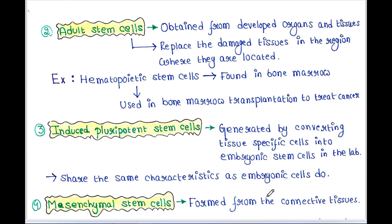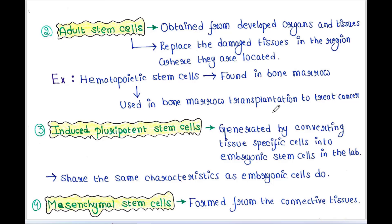Next, let's talk about adult stem cells. Adult stem cells are obtained from developed organs and tissues. They replace the damaged tissues in the region where they are located. An example is hematopoietic stem cells, which are found in the bone marrow and are used in bone marrow transplantation to treat cancer.